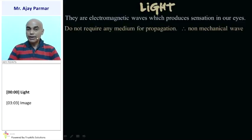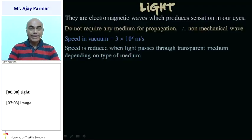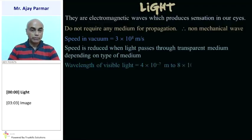Light does not require any medium for propagation, which means they are non-mechanical waves. Unlike sound, light does not require any medium. Speed of light in vacuum is 3 into 10 raised to 8 meter per second, that is 3 lakh kilometer per second. When light travels through various media, from one transparent medium to another different transparent medium, the speed of light is reduced when it travels from rarer transparent medium to denser transparent medium.